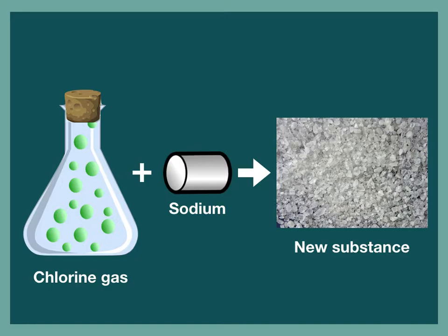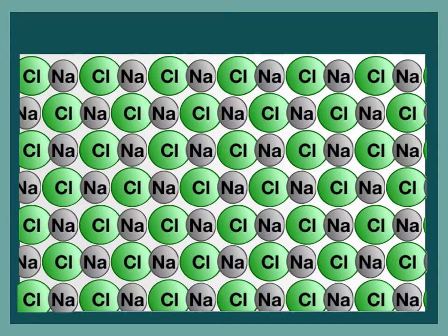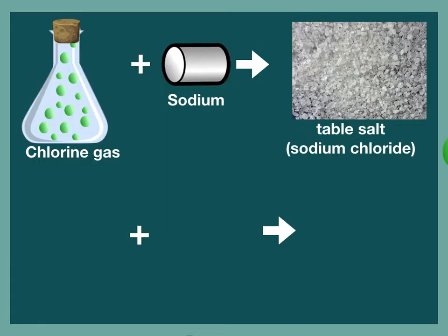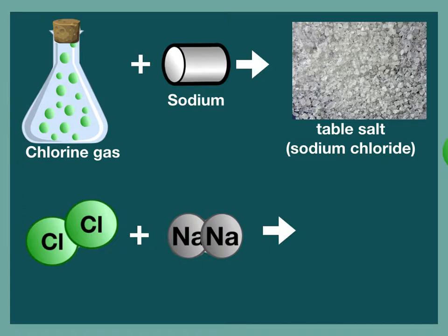Finally, let's look at the new substance that was created. As we zoom in, we can see the crystals of the new substance are made up of repeating patterns of sodium and chlorine atoms joined together. So at the microscopic level, we have two chlorine atoms joining with two sodium atoms to create a new compound that has one sodium and one chlorine atom joined together. This molecule is called sodium chloride.